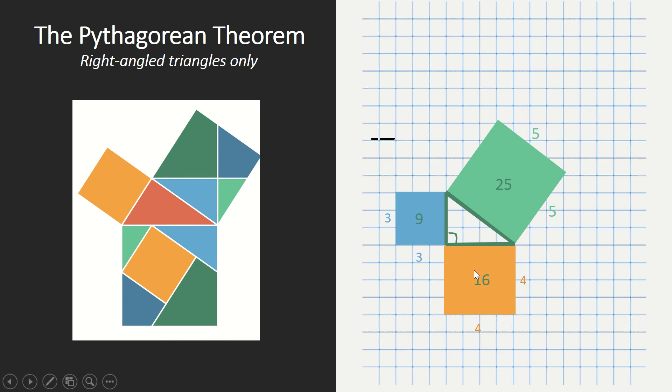What they do is add the area of the two small squares, and you get the area of the large square. And that's not only for this example, but for all right-angled triangles.